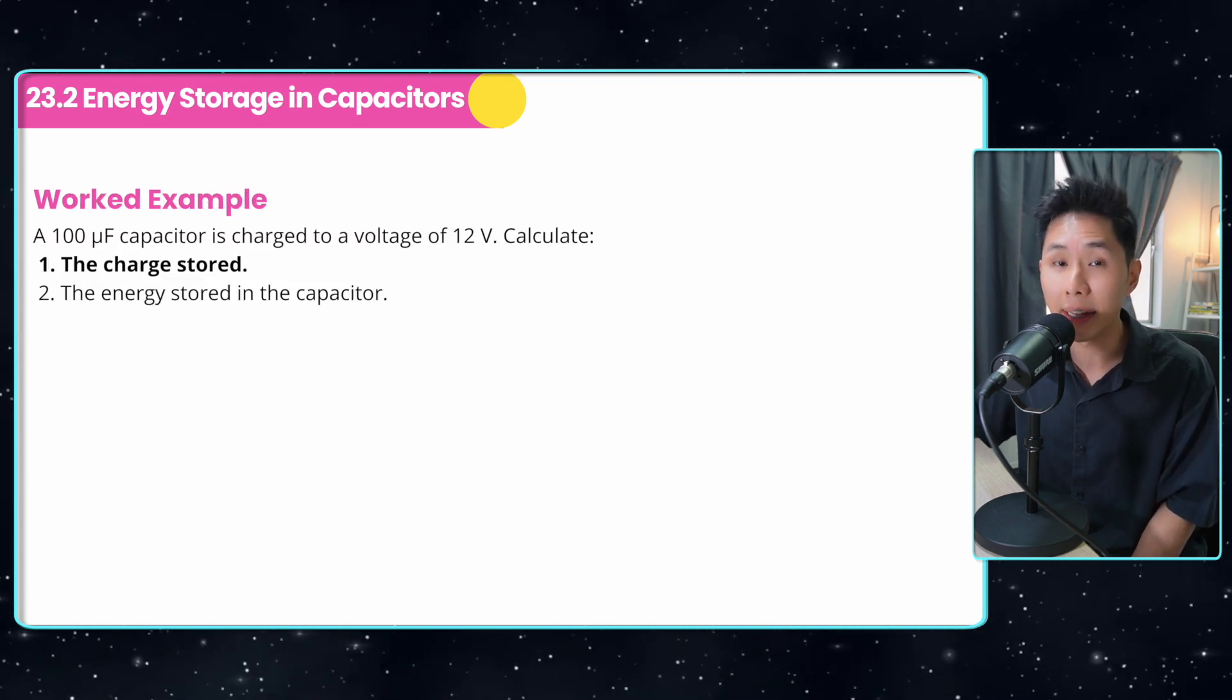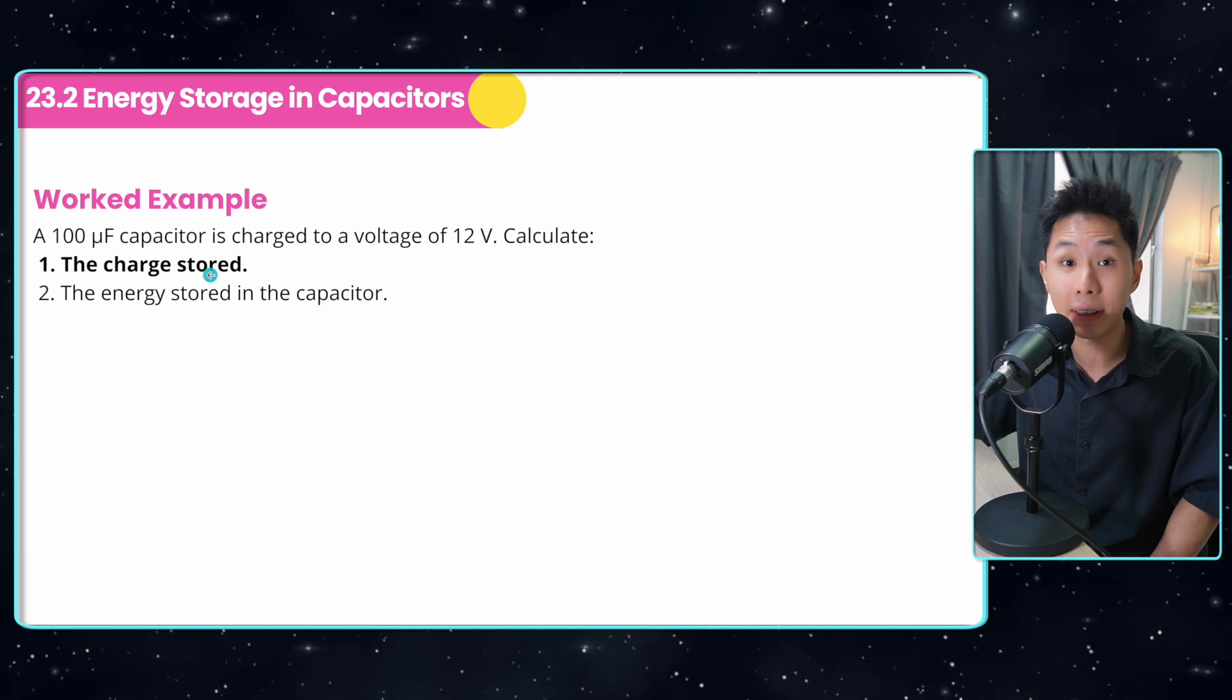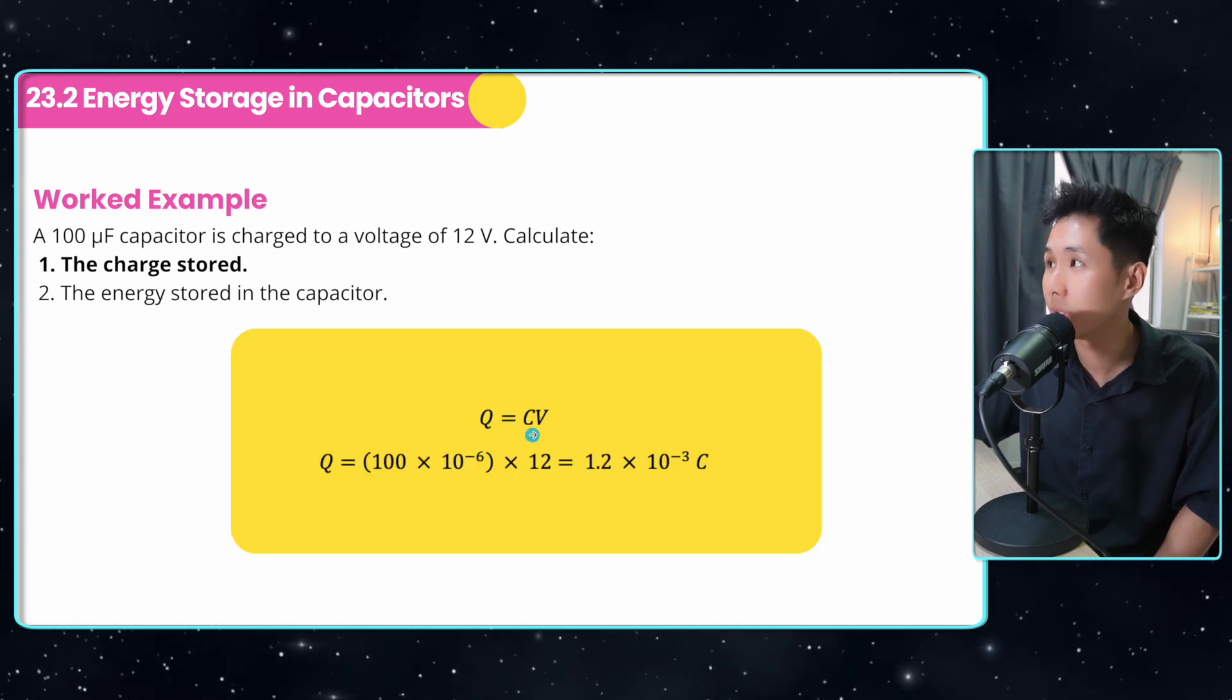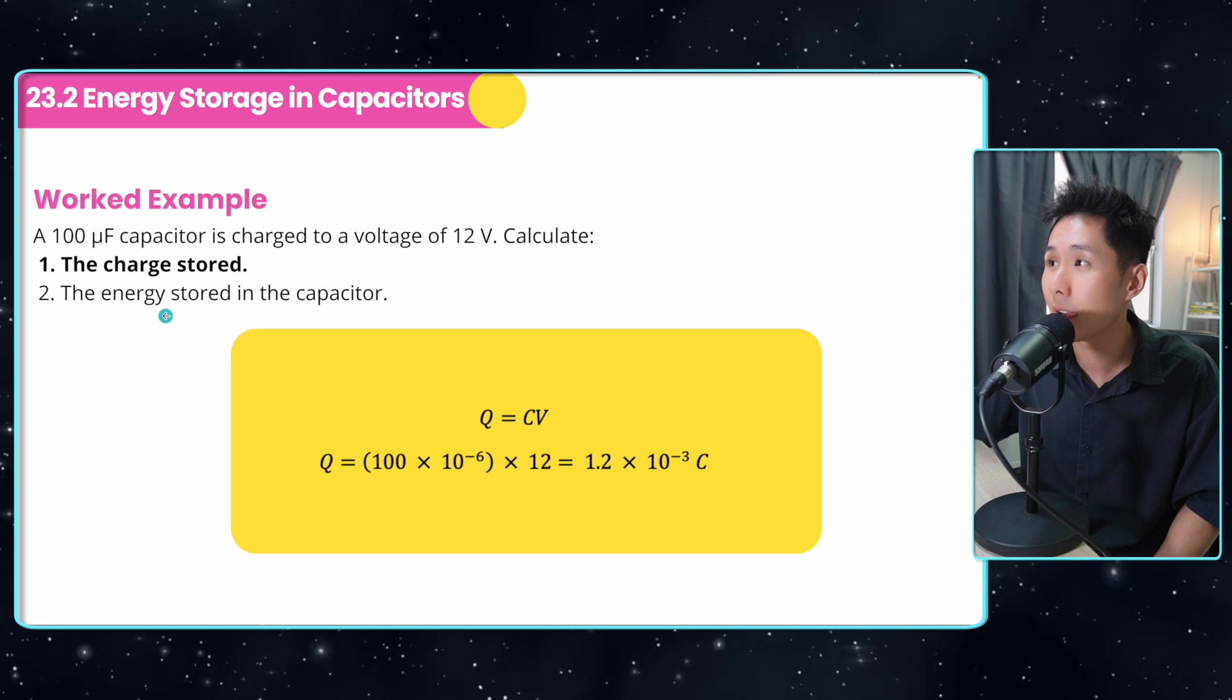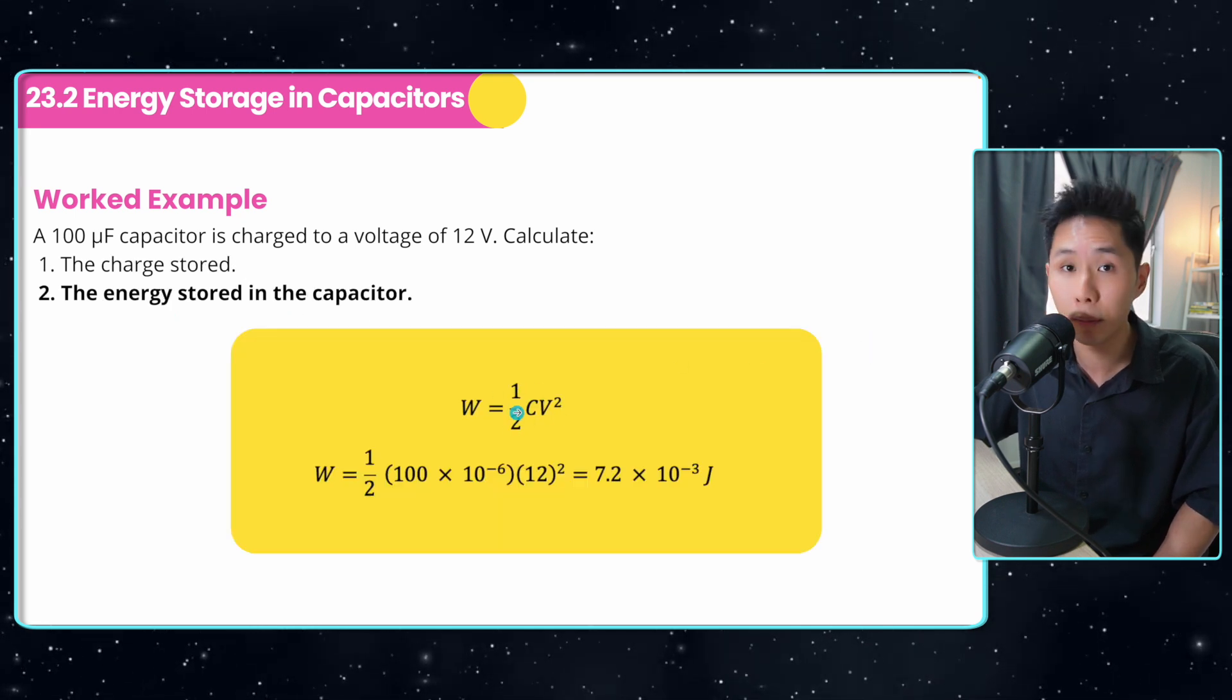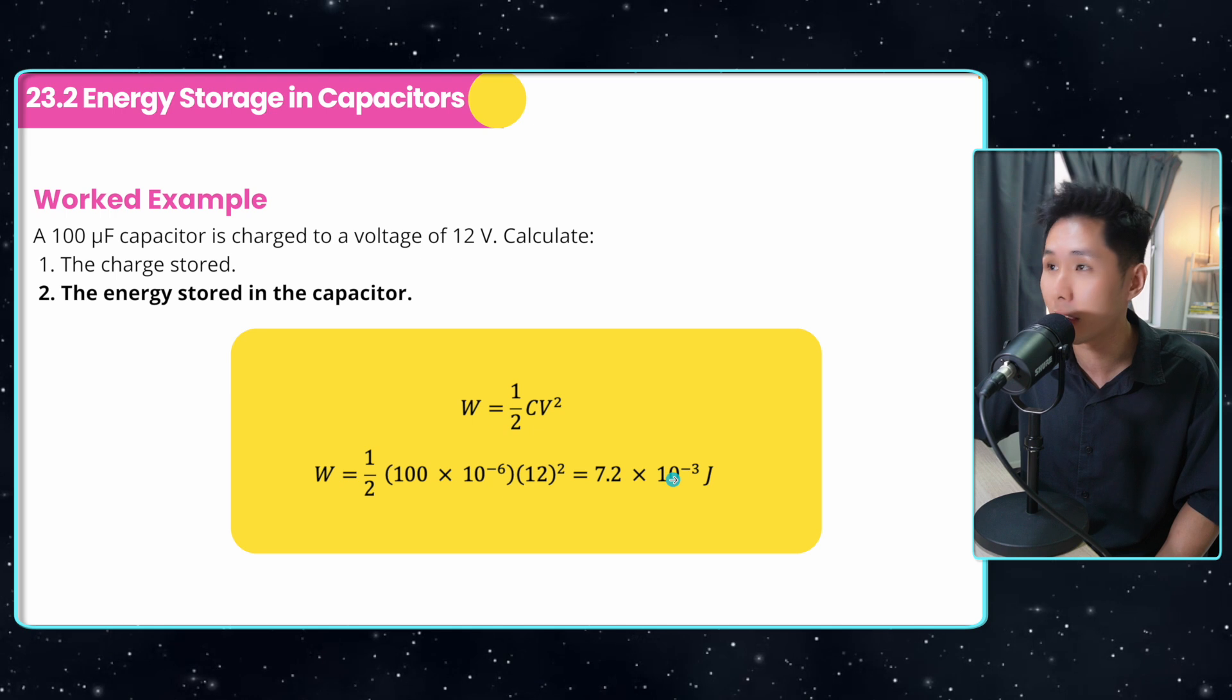So let's try to solve a worked example. So I have this 100 microfarad capacitor charged to voltage of 12 volts, calculate the charge stored. So I could use the formula given, charge equal to C times V, multiply together. The second question is calculate the energy stored in the capacitor. So again, I could use the formula given W equal to half CV squared, and substitute all the answers inside, and you have gotten the value.